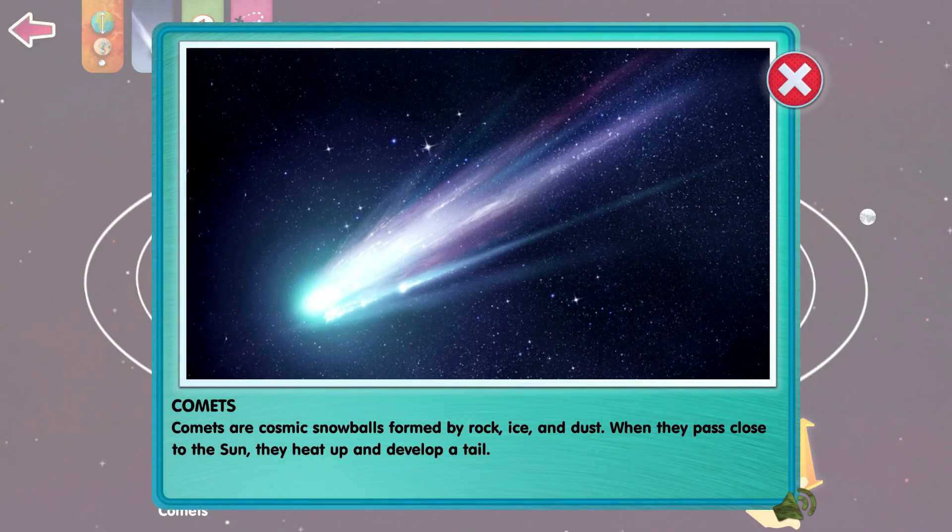Comets are cosmic snowballs formed by rock, ice, and dust. When they pass close to the Sun, they heat up and develop a tail.